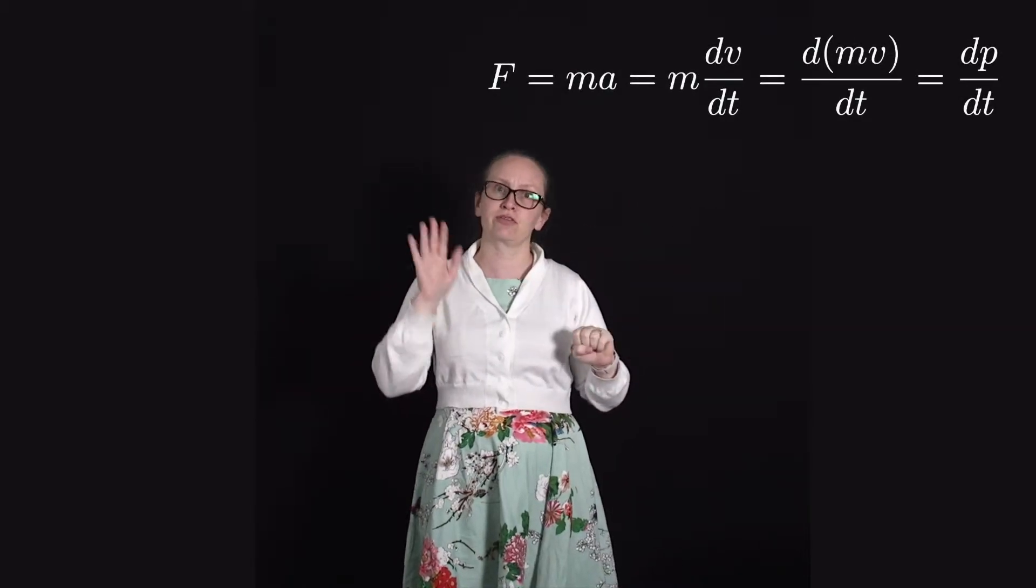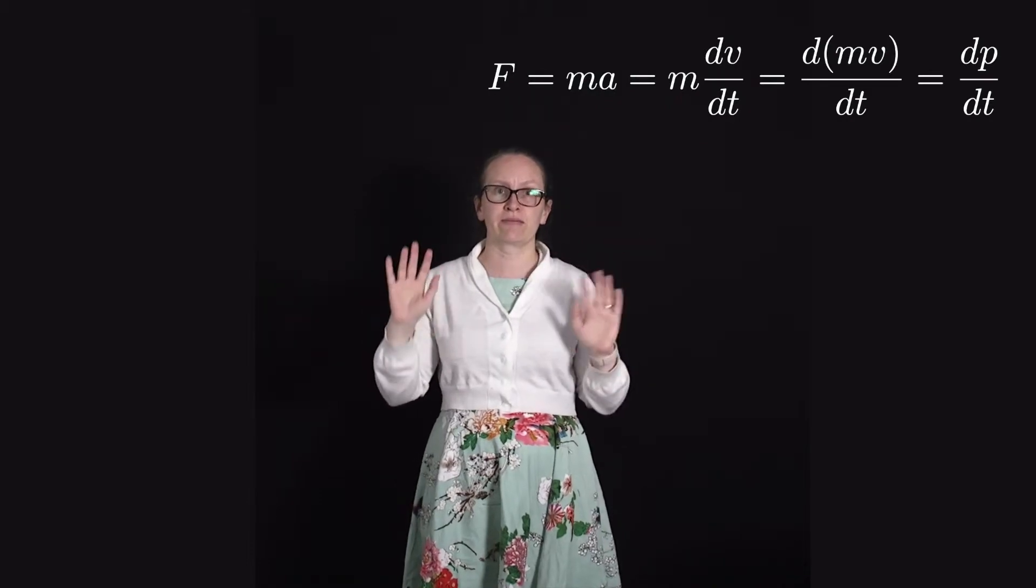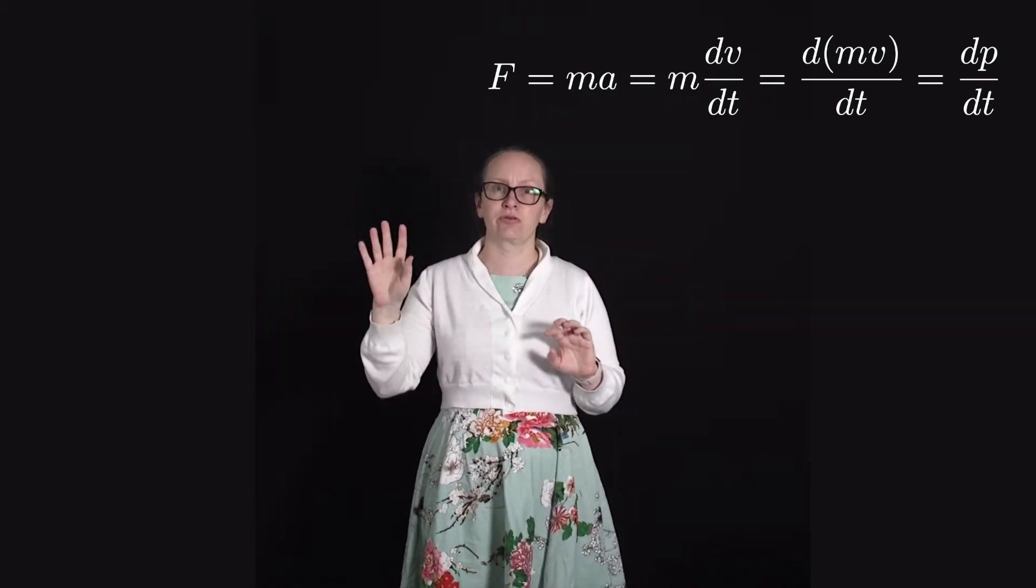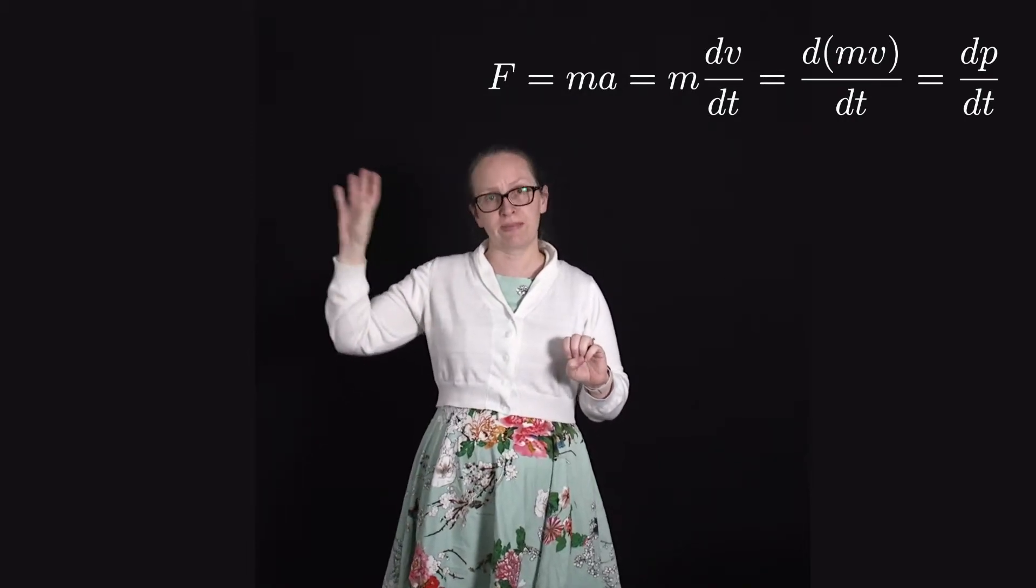So in the non-relativistic case we can write Newton's second law as F is equal to ma, which is equal to m times dv/dt, which if we're assuming that mass doesn't change is equal to d(mv)/dt, which is equal to dp/dt.